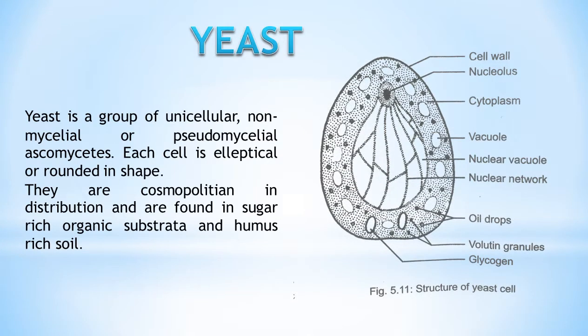Yeast is a group of unicellular, non-mycelial or pseudomycelial ascomycetes. Each cell is elliptical or rounded in shape. They are cosmopolitan in distribution and are found in sugar-rich organic substrata and humus-rich soil.